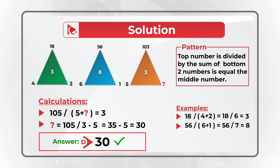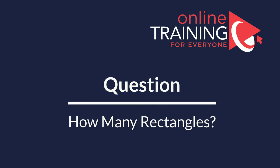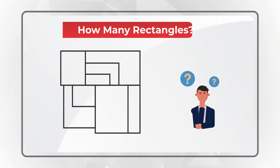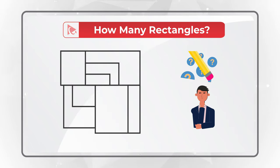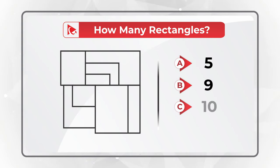Hopefully you've nailed this question and now can easily solve these types of challenges on the test. Here is an amazing question to test your analytical brain power. You are presented with a shape and you need to determine how many rectangles are part of this shape. You have four different choices: Choice A, 5. Choice B, 9. Choice C, 10. And choice D, 12.